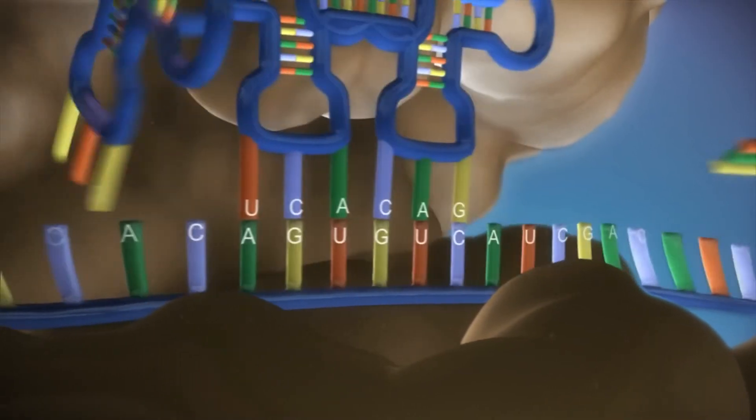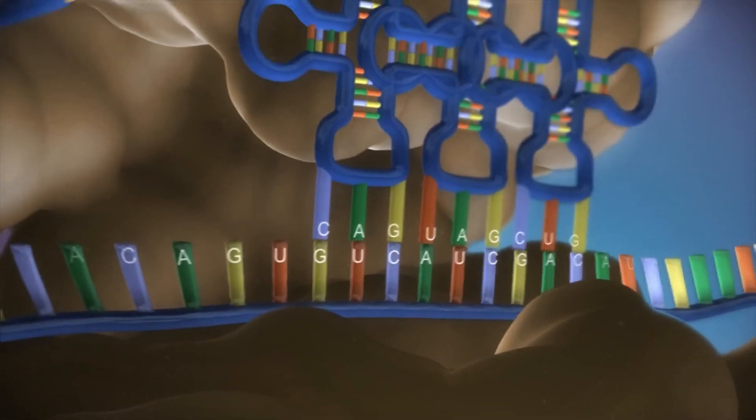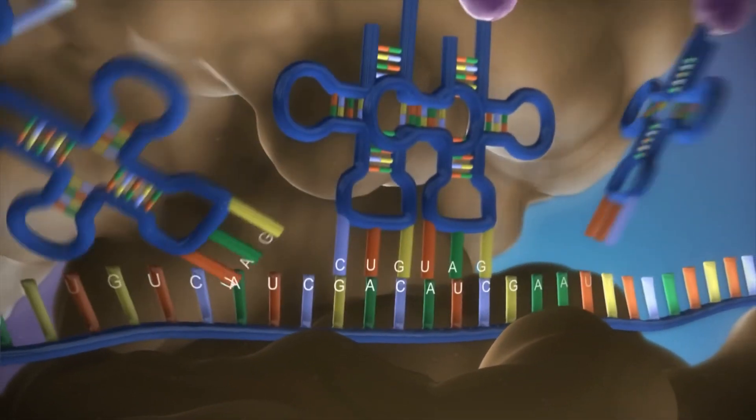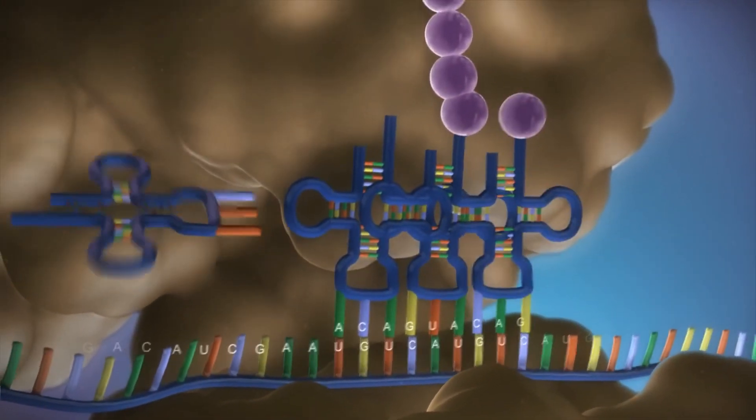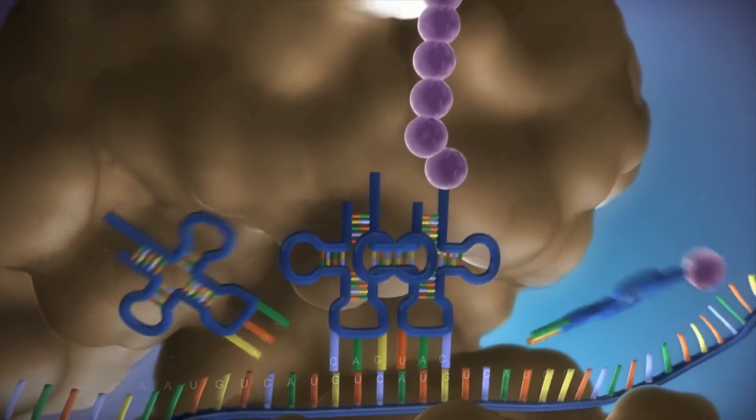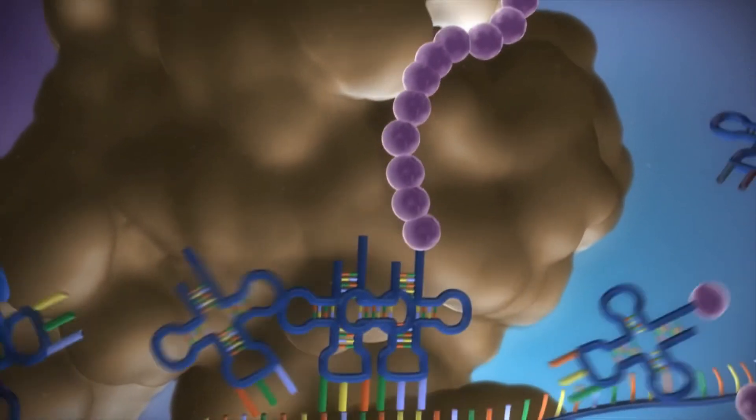The messenger RNA is read three bases at a time. As each triplet is read, a transfer RNA delivers the corresponding amino acid. This is added to a growing chain of amino acids.